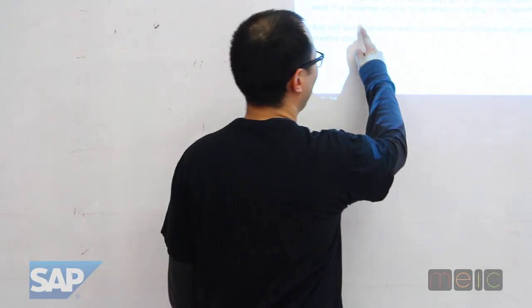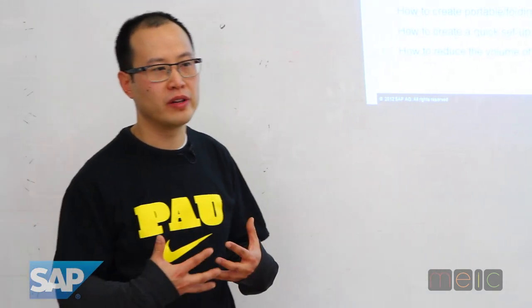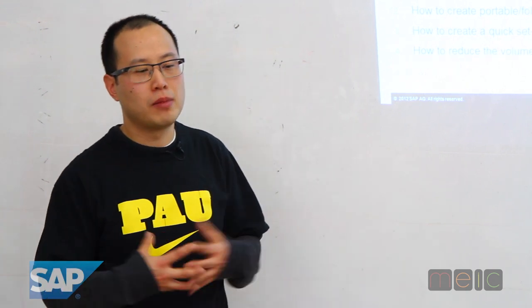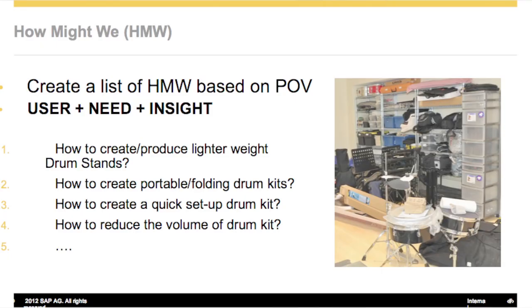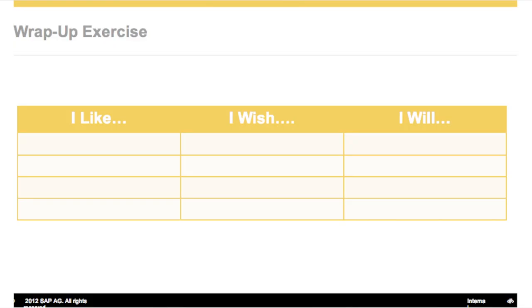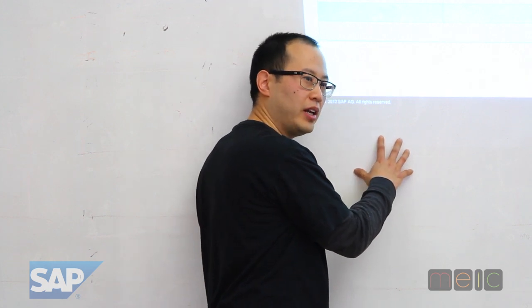Once we get a point of view, we generate 'How Might We' statements. So taking that POV, we ask things like: How do we create a lighter weight drum stand? How do we create a portable folding drum kit? How do we create a quick setup drum kit? How do we reduce the volume of a drum kit? You get all these things down — maybe eight or ten of them. Then we start circling the ones we want to build, take those forward, and move into the next idea generation or design phase.